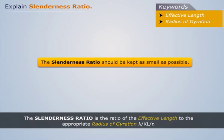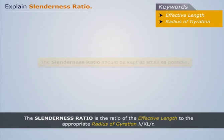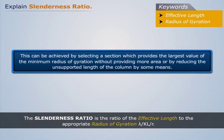The slenderness ratio should be kept as small as possible. This can be achieved by selecting a section which provides the largest value of the minimum radius of gyration without providing more area, or by reducing the unsupported length of the column by some means.